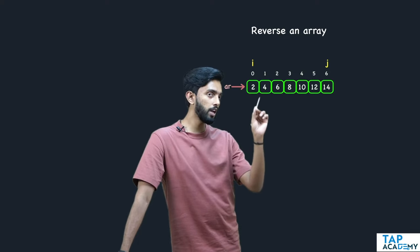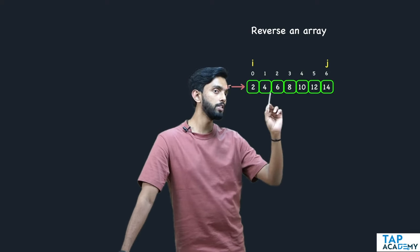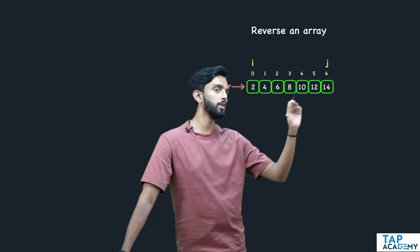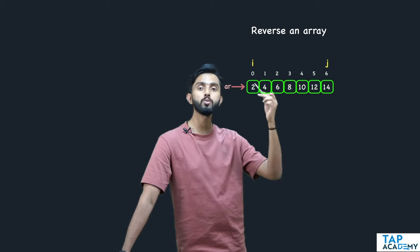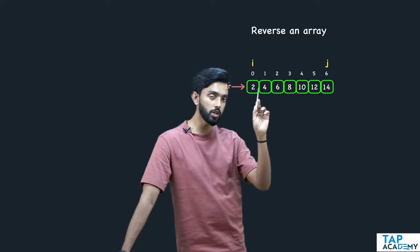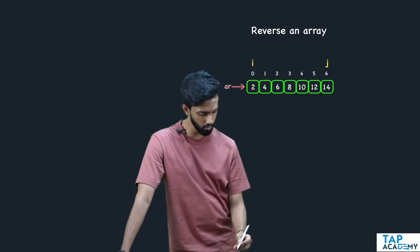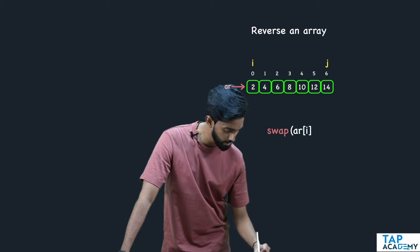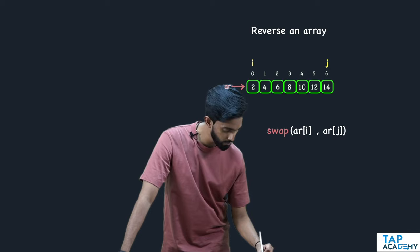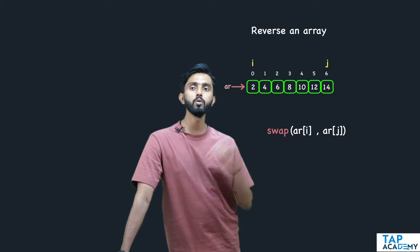The first element should come to the last element, and this element should come here — they should get swapped. So the element at position i should get swapped with the element at position j. That's all you have to do. Swap a[i] with a[j], that's all.